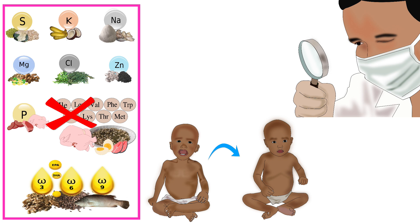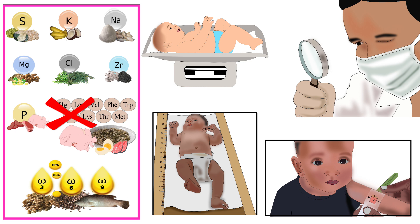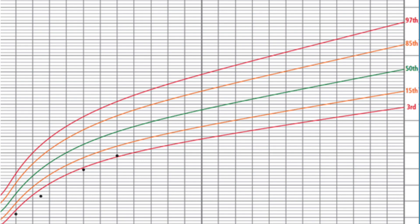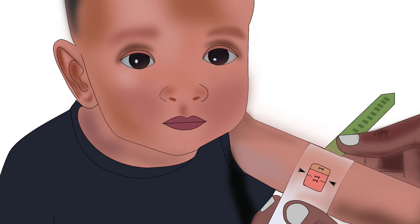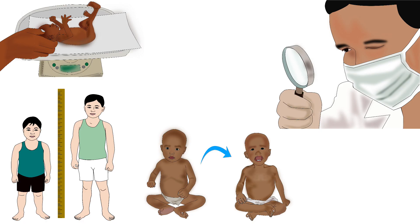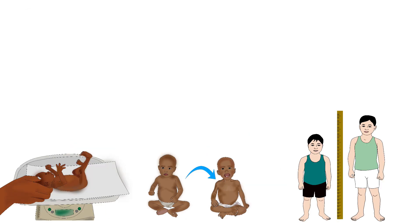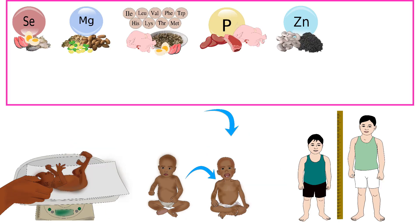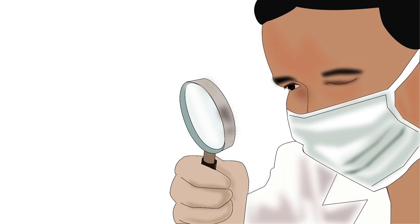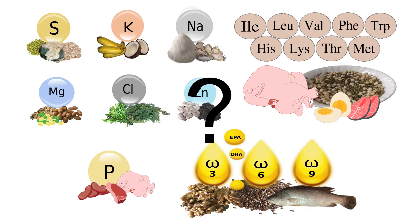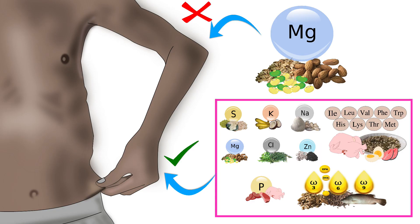Diagnosis and treatment of a type 2 nutrient deficiency is difficult. There is only one way to diagnose any type 2 nutrient deficiency: measuring and tracking the weight, height, and mid-upper arm circumference. However, this will only help in detecting growth failure, which is caused by every type 2 nutrient deficiency. It is difficult to determine which specific nutrient the body is deficient in, so correcting a type 2 nutrient deficiency requires all type 2 nutrients.